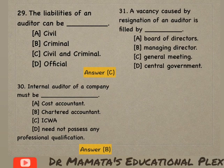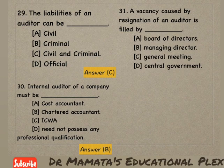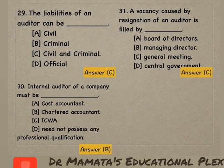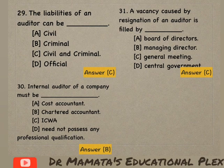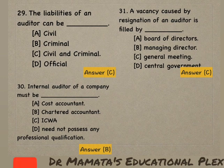Next: A vacancy caused by resignation of an auditor is filled by — board of directors, managing directors, general meeting, or central government? Agar auditor resign kar deta hai aur vacancy create ho jaati hai toh use general meeting mein fill up kiya jaata hai, kyunki general meeting mein is par discuss hota hai aur decision hota hai. So option C is the correct answer.